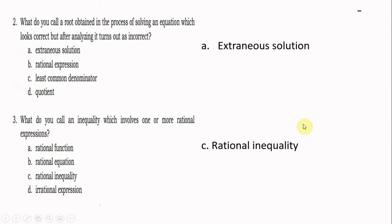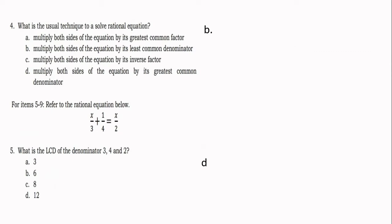Number 3: What do you call an inequality which involves one or more rational expressions? That is a rational inequality. Number 4: What is the usual technique to solve a rational equation? The answer is you have to multiply both sides of the equation by its least common denominator.